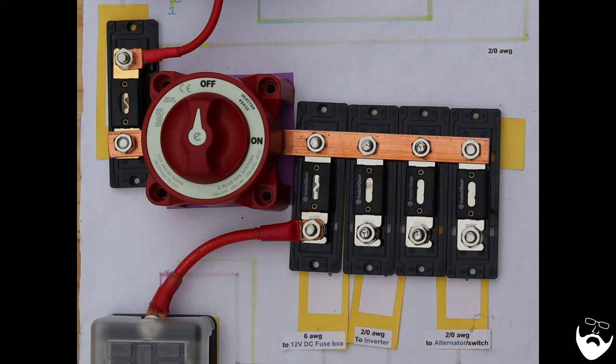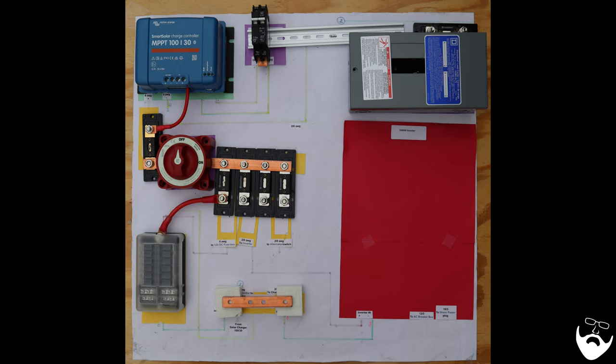A 100 amp fuse goes through a 6 gauge wire and to the DC fuse box. The 250 amp fuse goes through a 2/0 wire to the inverter. The other 250 amp fuse goes to the alternator switch which will allow us to charge the batteries using the van's alternator.